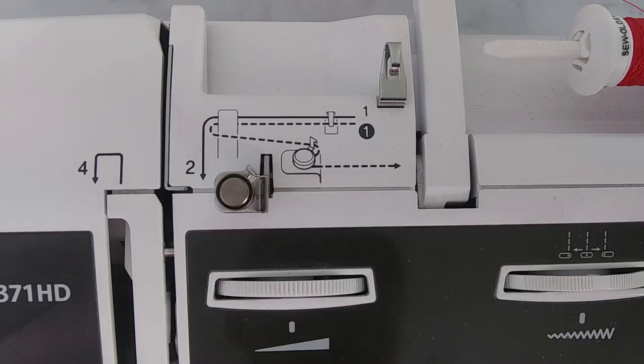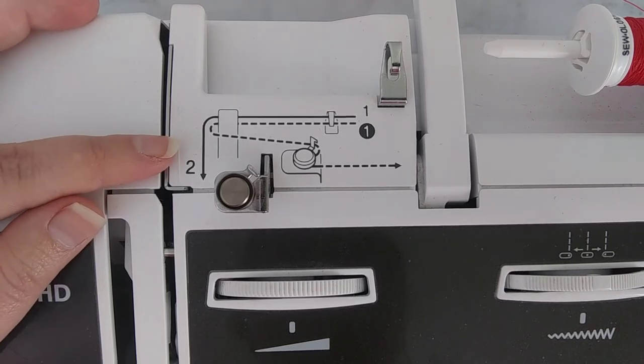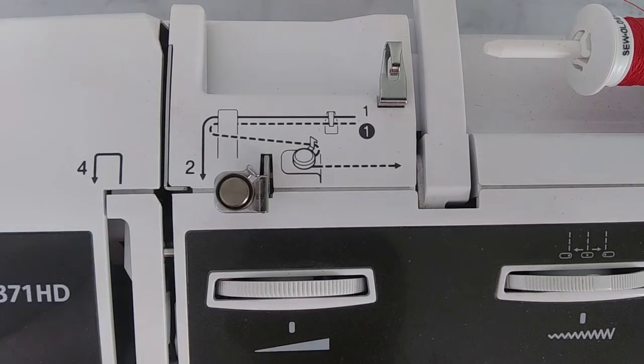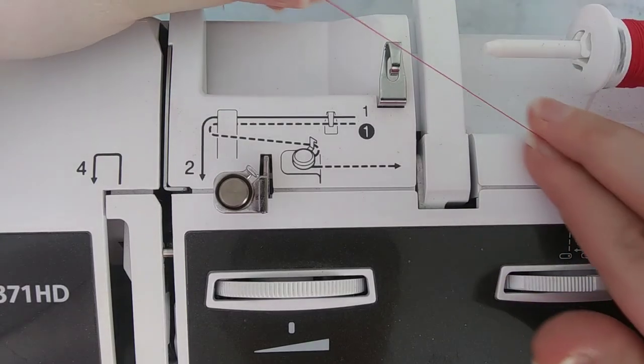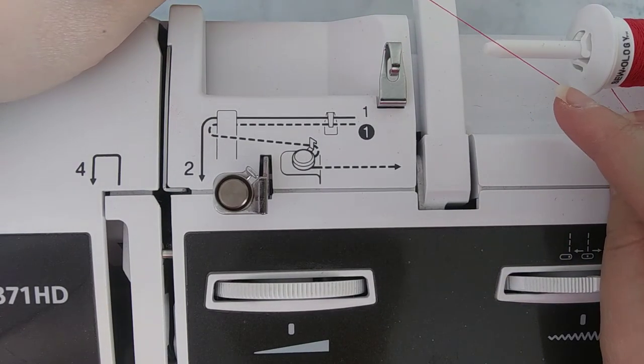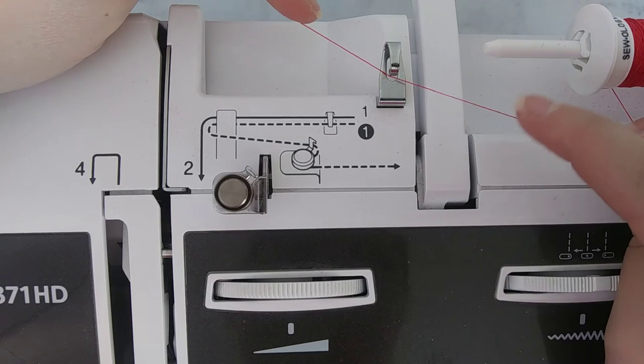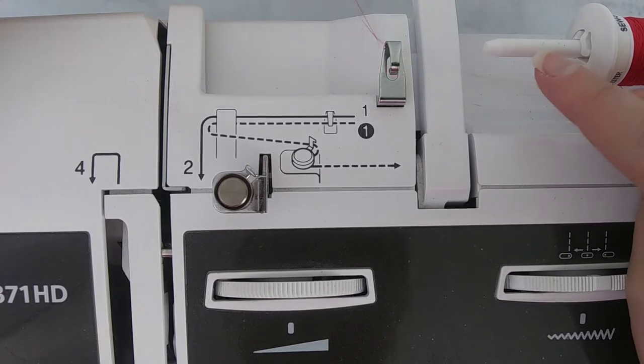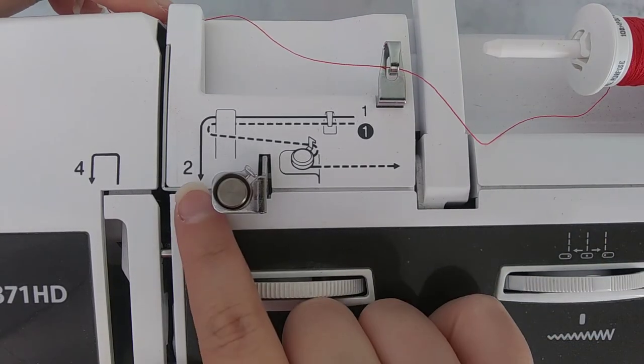After we've wound our bobbin and put it in the sewing machine, now we are going to follow along on the solid line to thread the machine down to the needle. Now we're going to follow along the solid line.